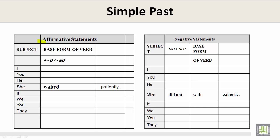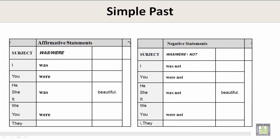For the simple past, we have affirmative statements and negative statements with the subject and the base form of the verb. For example, the subject 'she' with the base form 'wait' plus -ed gives: she waited patiently. For negative statements: subject plus did not plus the base form — she did not wait patiently. Please complete the rest at home on your own piece of paper.